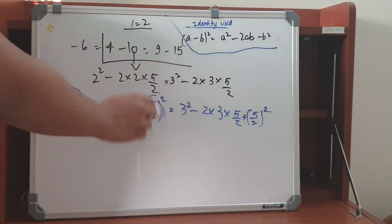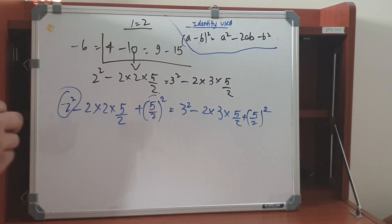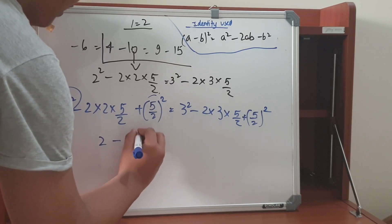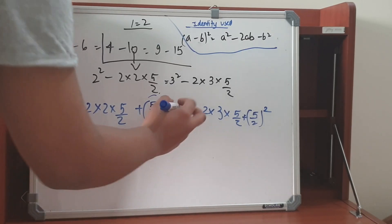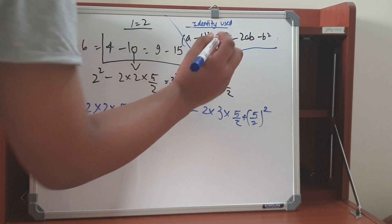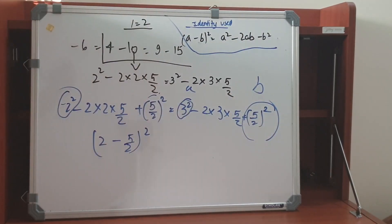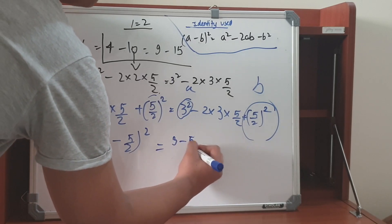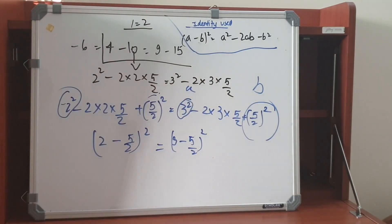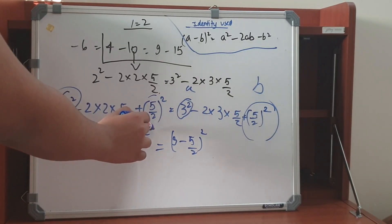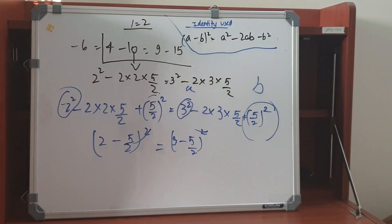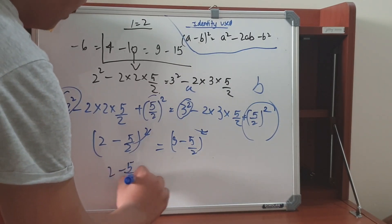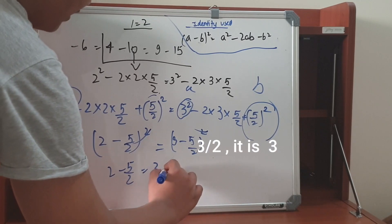So we can write the left side as (2 minus 5/2) to the whole square. In the right-hand case, a is 3 and b is 5/2, so we write (3 minus 5/2) to the whole square. Now we cancel the square sign from both sides and write: 2 minus 5/2 is equal to 3 minus 5/2.